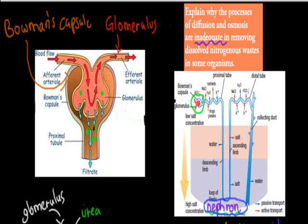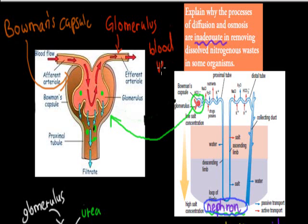What I've drawn here in yellow is a zoomed-in view of the first part of the kidney. We've got the Bowman's capsule, which is the part in brown, and the glomerulus, which is basically blood vessels that carry all the nutrients and the urea. The green dots I've drawn are the urea — that's the stuff we want to get rid of. The nitrogenous waste is the urea, and it enters the Bowman's capsule, which is the first part of the kidney.